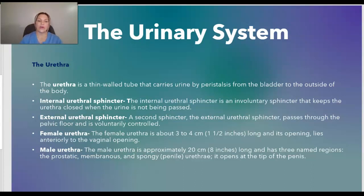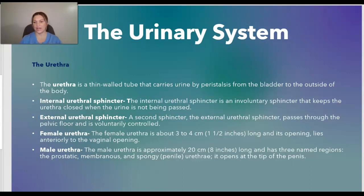The female urethra is about three to four centimeters long and its opening lies anteriorly to the vaginal opening. The male urethra is longer, approximately 20 centimeters long, and has three named regions: the prostatic, the membranous, and the spongy, and it opens at the tip of the penis where the urine is released.